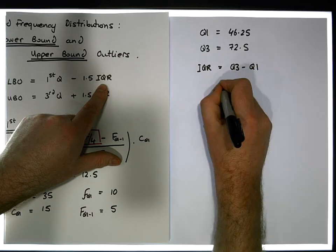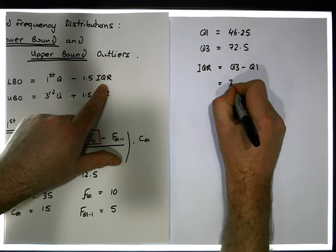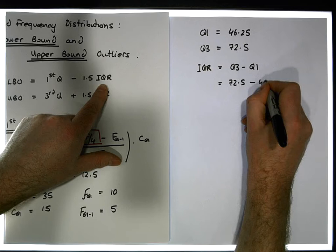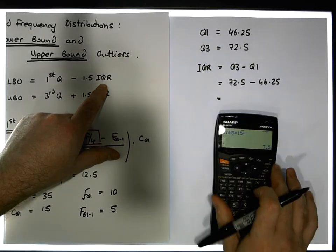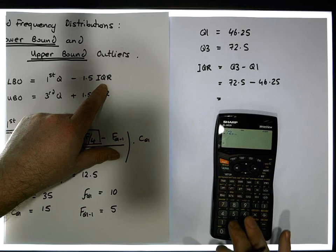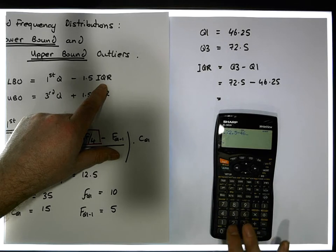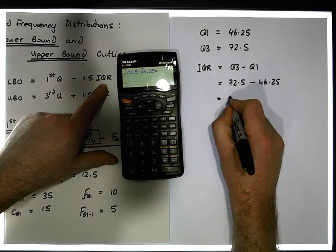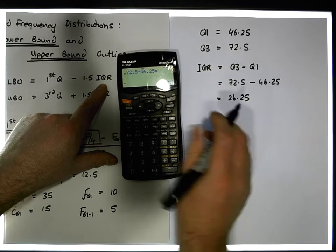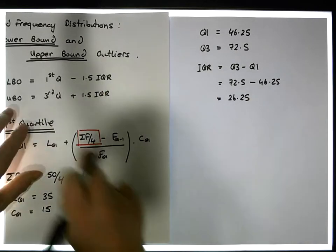Well what's that, that's going to be equal to 72.5 minus 46.25, which gives us a value of 72.5 minus 46.25, which gives us a value of approximately 26.25. So 26.25. So now we're ready to calculate our lower bound outliers.